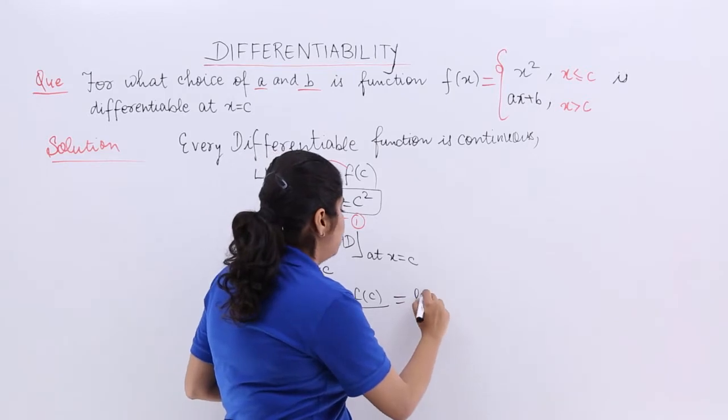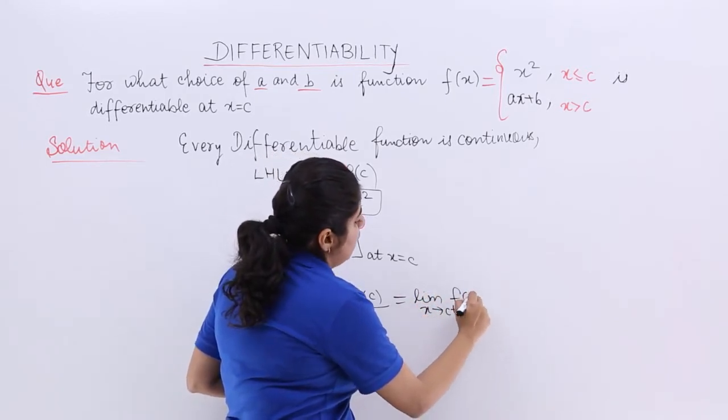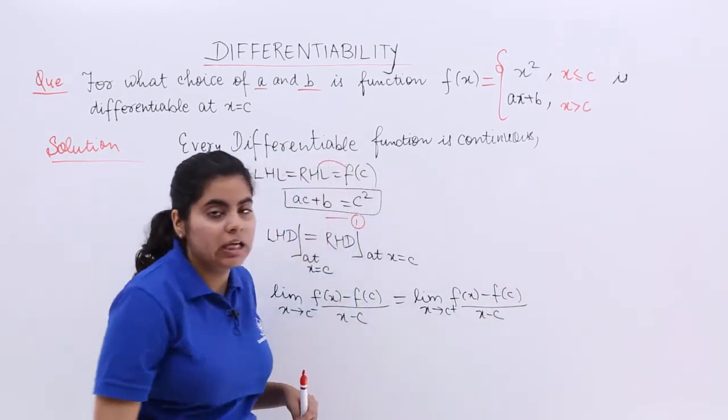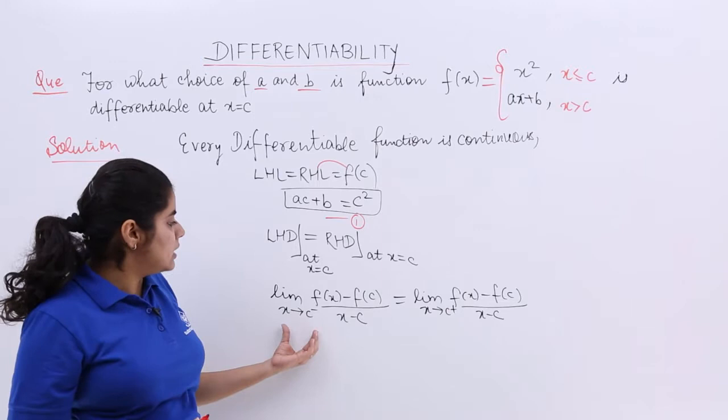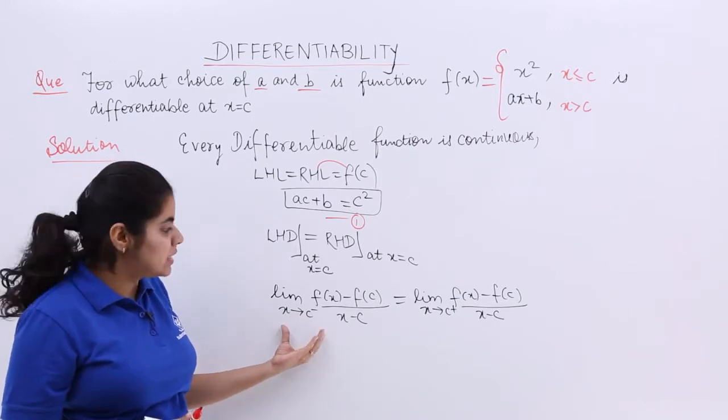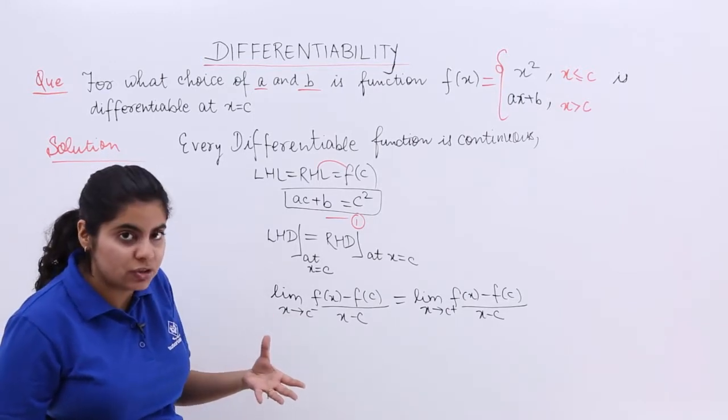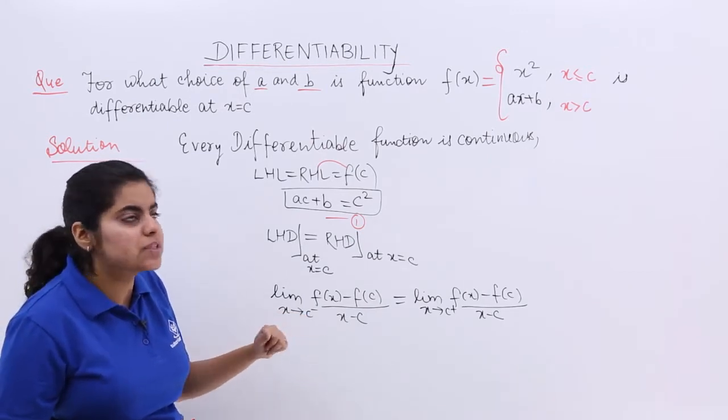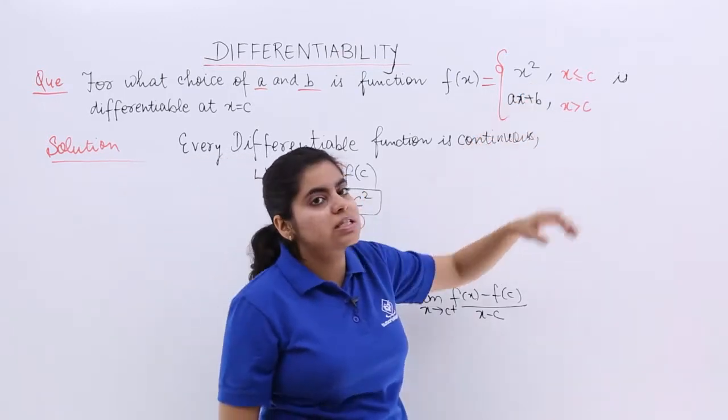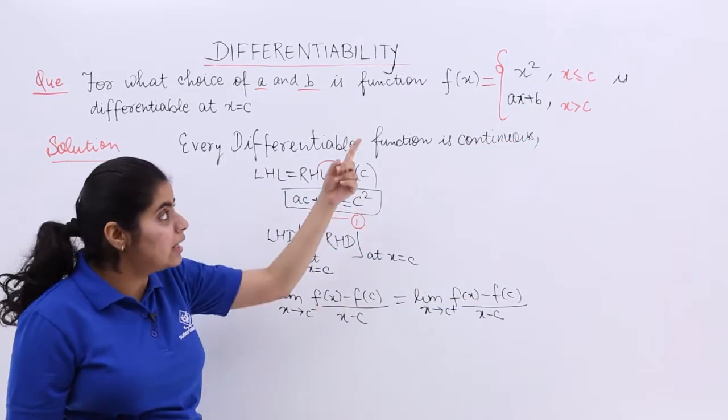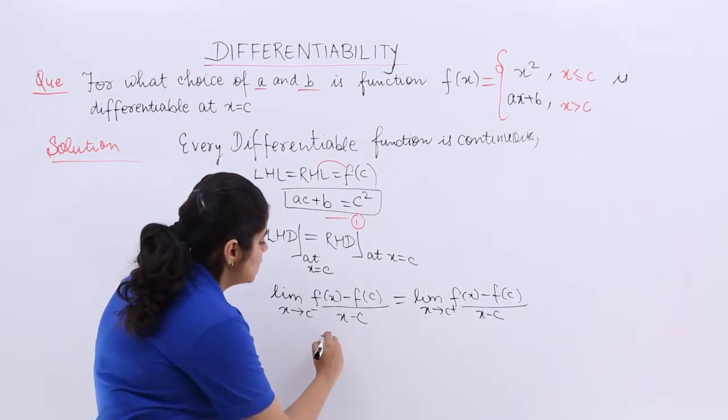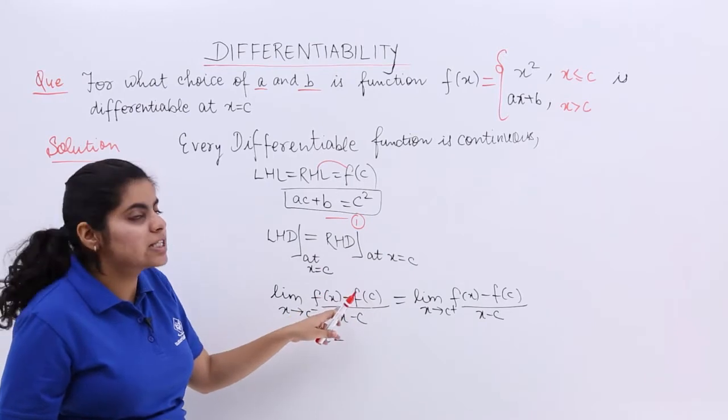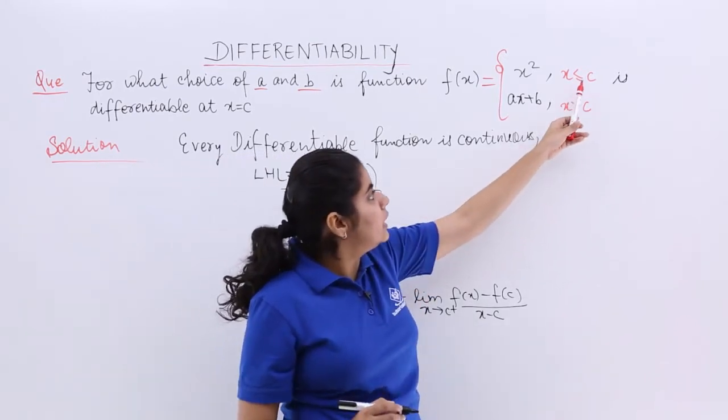Right? Here also limit x tends to c positive f of x minus f of c upon x minus c. Now, here it is c minus, we have to look for the expression which is on the lesser side of c, left hand side of c. Left hand side means x square. So, wherever it is f(x), you will be writing x square. So, it is x square minus f of c.